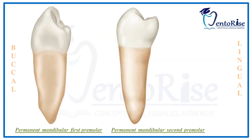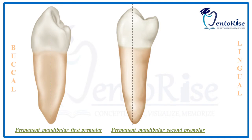The second heading is the buccal cusp, with sub-headings covering the position and length of the buccal cusp. Regarding position, in a permanent mandibular first premolar the buccal cusp is present in the center, while in a permanent mandibular second premolar the buccal cusp is not present in the center — very evident in the figures. Regarding length, the buccal cusp is longer in the first premolar compared to the second premolar, where it is shorter.